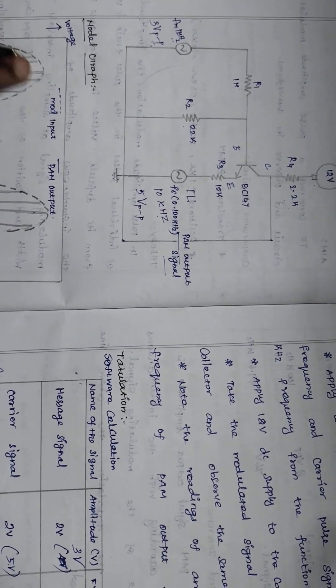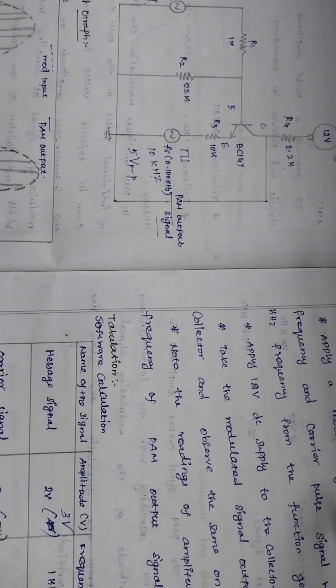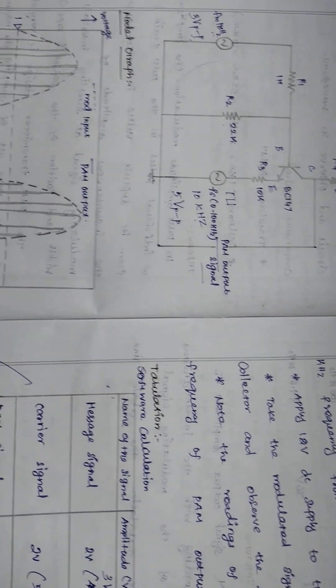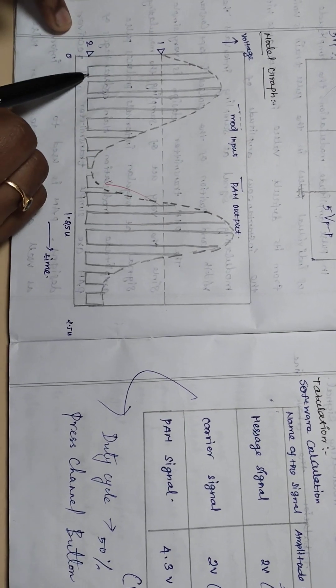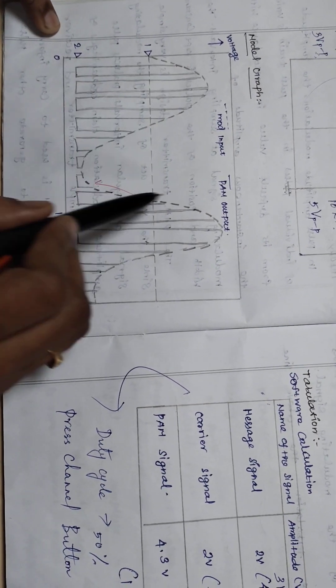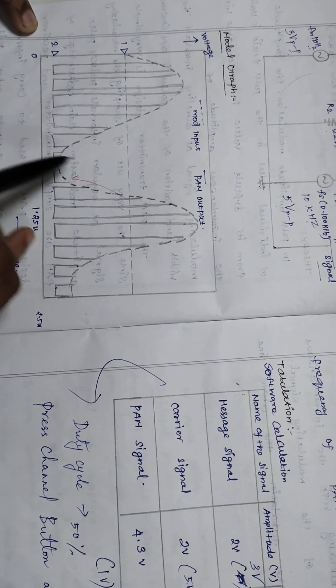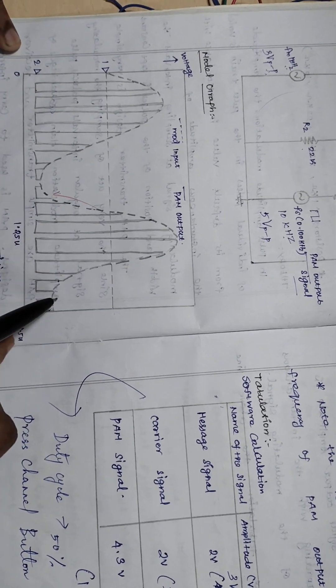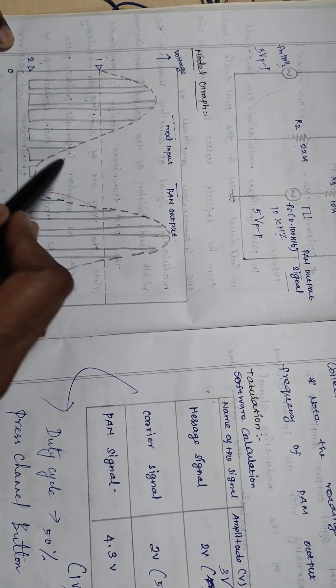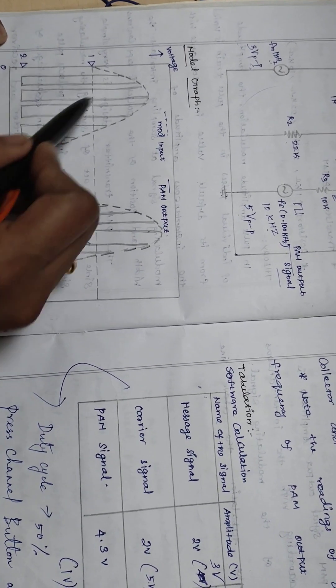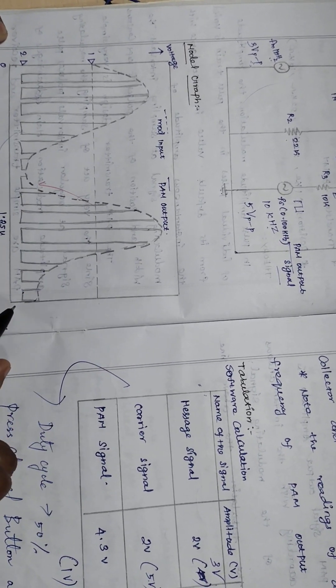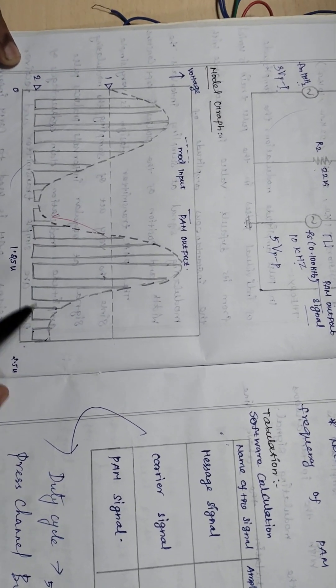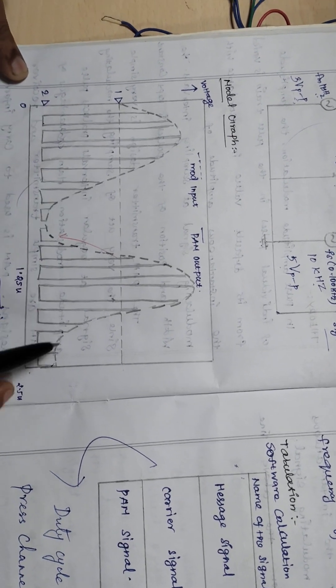We are going to observe a PAM output where the carrier signal is modulated along with the message. The envelope will be the message signal, and the internal frequency will be the carrier signal. This will be observed on the oscilloscope.